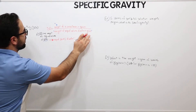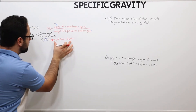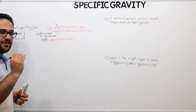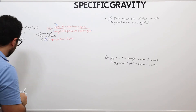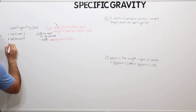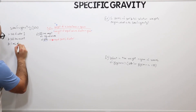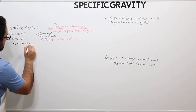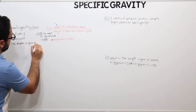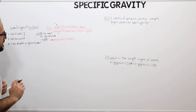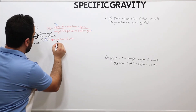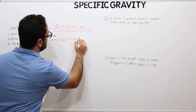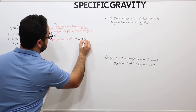However, here we are looking for grams, so how can I convert 20 milliliters of water to grams? This is the third thing to keep in mind: 1 milliliter of water equals 1 gram of water. Therefore, 20 milliliters of water equals 20 grams of water.